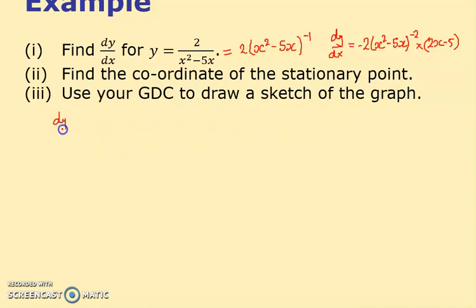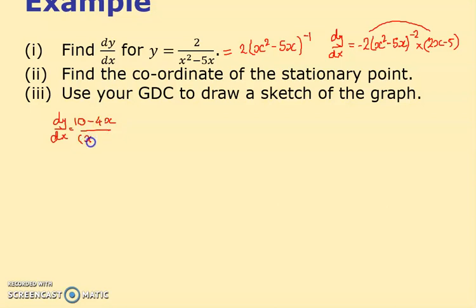So dy/dx equals minus two lots of that bracket, which is best written as (10 - 4x) divided by (x² - 5x)². Notice the power is minus two, so I've put it on the bottom — that's why it's down there.